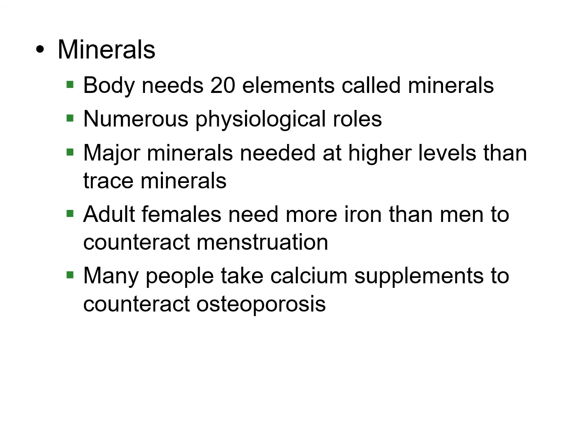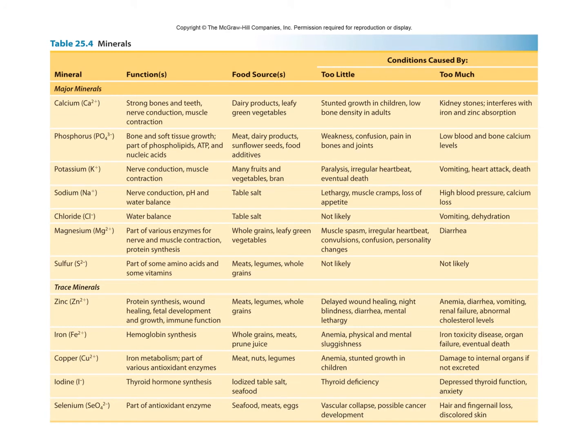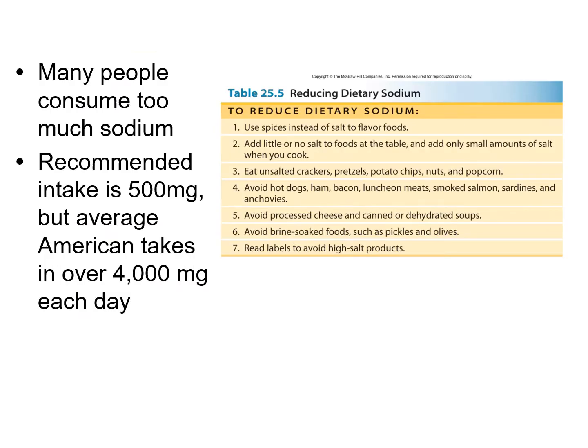There are 20 essential minerals, and needs vary by sex, age, and body type. Most females need extra iron because of menstruation. Many people need to take calcium to prevent osteoporosis. People with darker skin who don't get enough sunlight may need to take vitamin D supplements. These are all different micronutrients, and while you don't need to memorize every one, it's helpful to know where they come from and what happens with too much or too little.